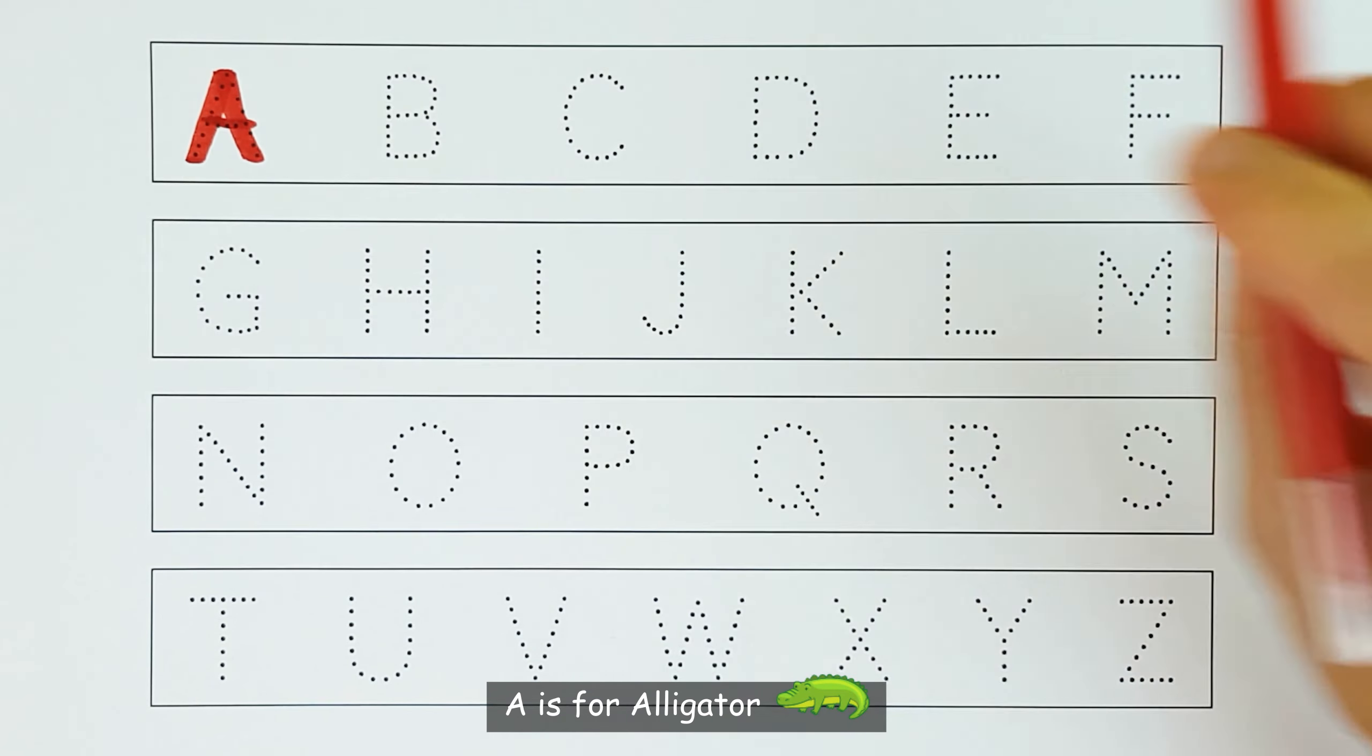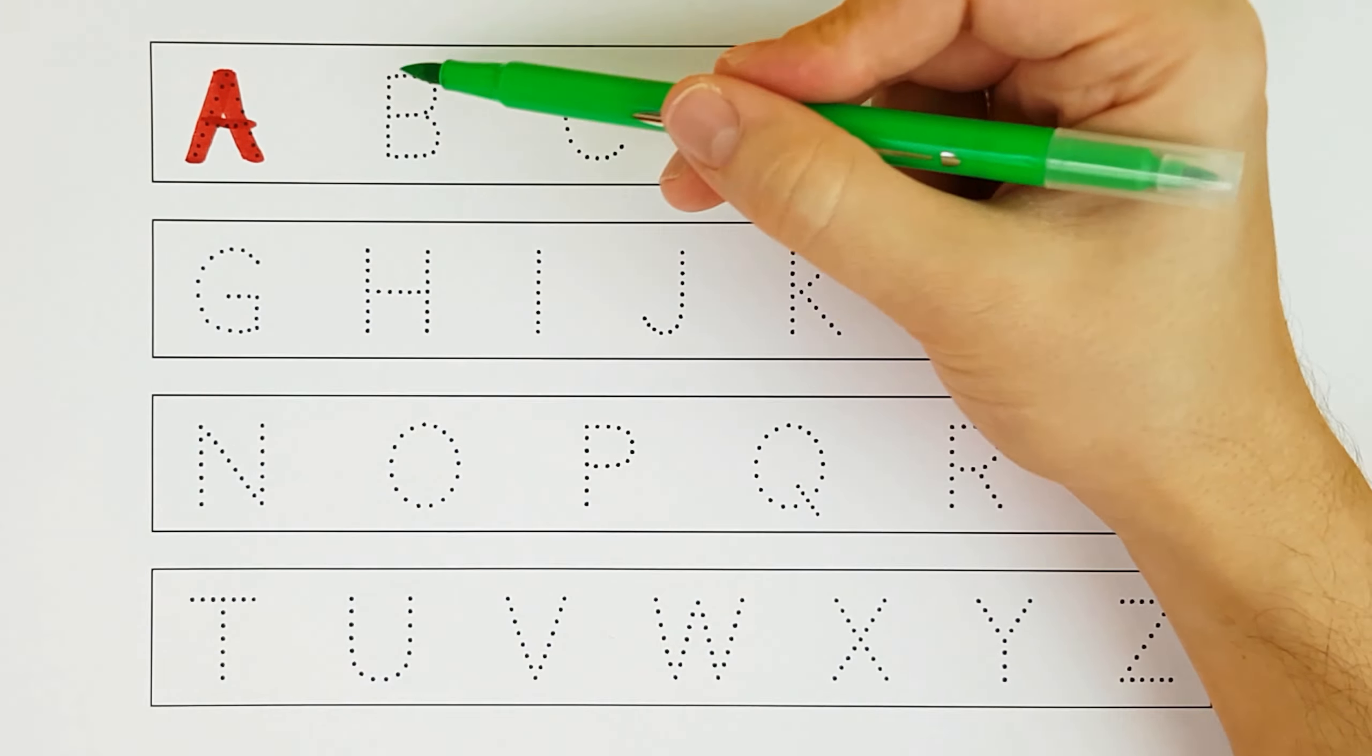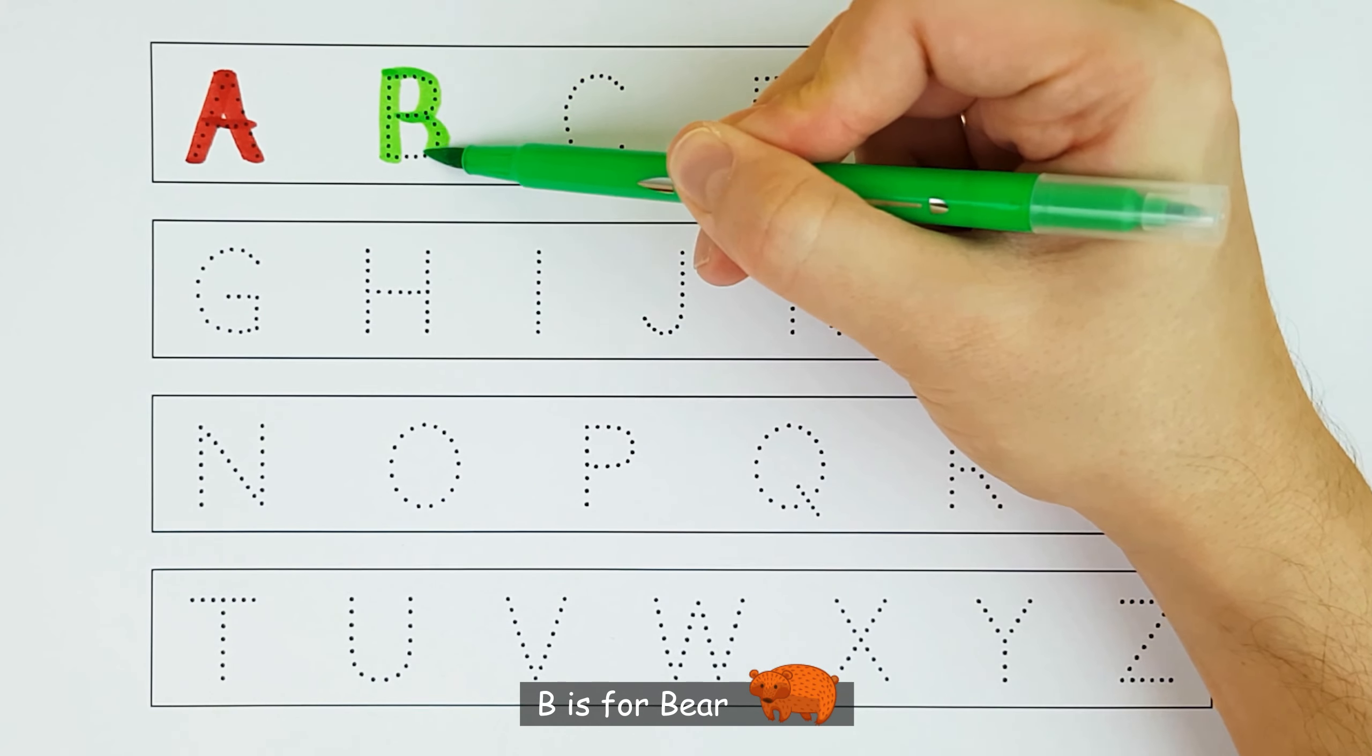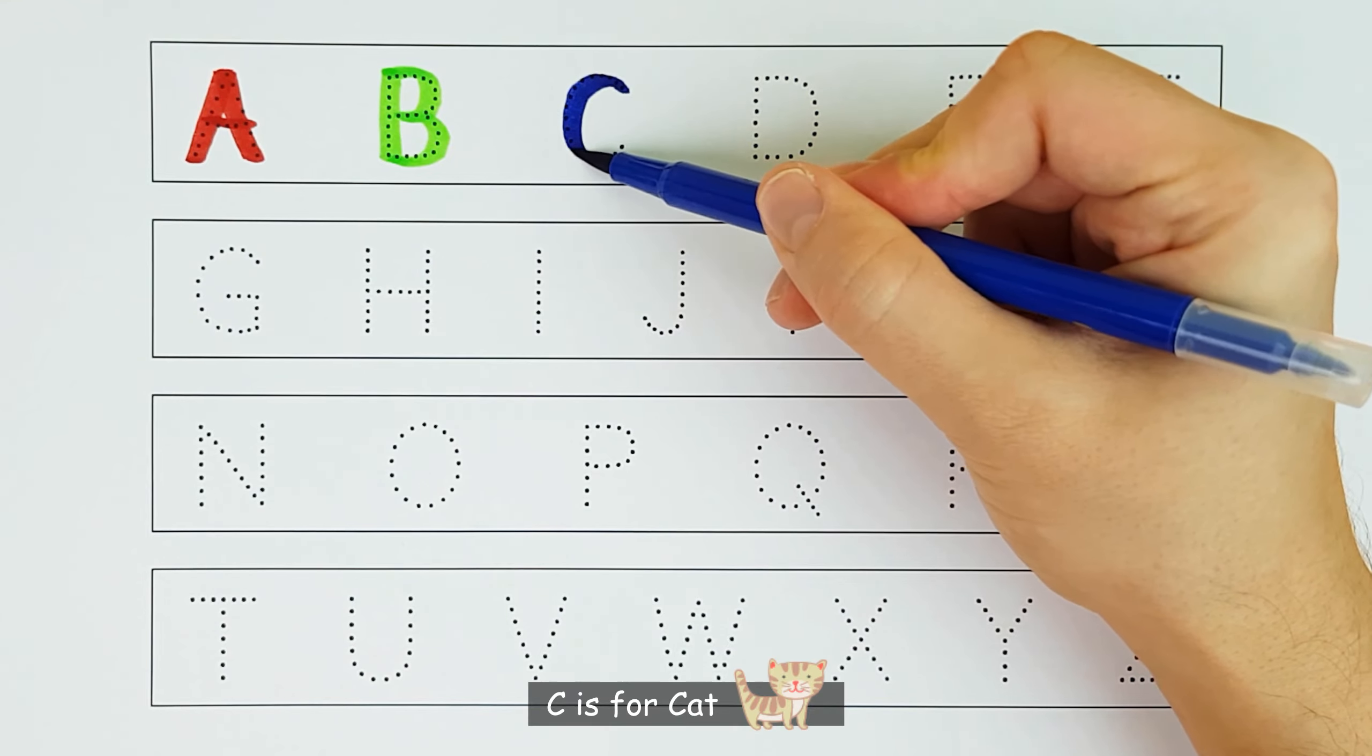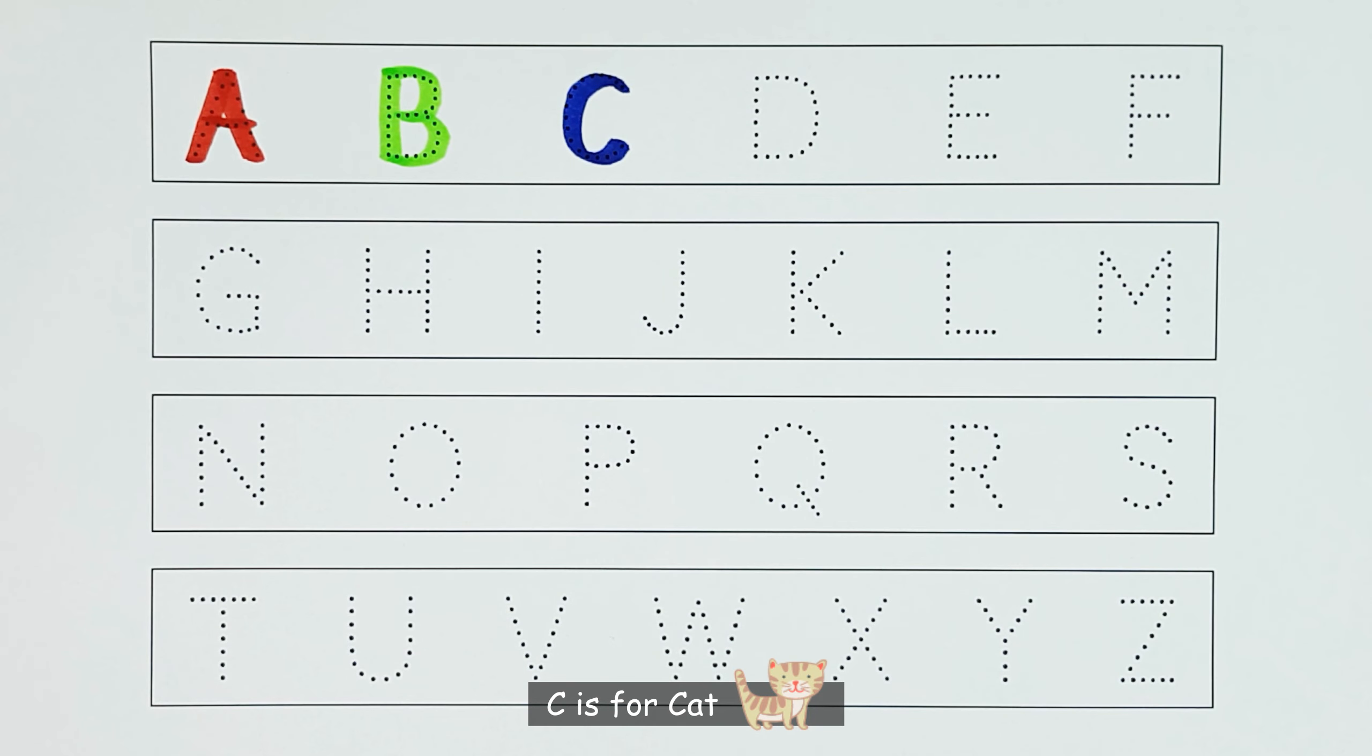A. A is for alligator. A. B. B is for bear. B. C. C is for cat. C.